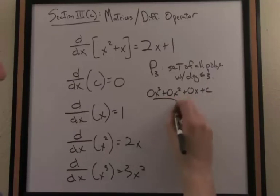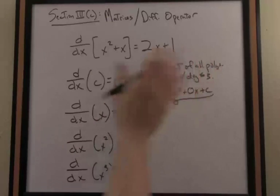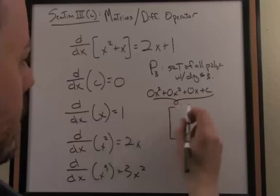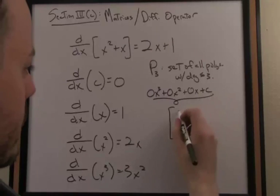So I could write this constant function in the world, or the vector space, if you like, of P3, in this encoded way. In other words, I just place the numbers. Let's just call it the constant, C.